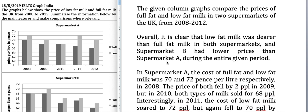You have to omit the word 'below' and instead write 'the given column graphs.' For the word 'show,' you can use 'compare,' because these graphs are comparing the prices of full-fat and low-fat milk in two supermarkets of the UK from 2008 to 2012.